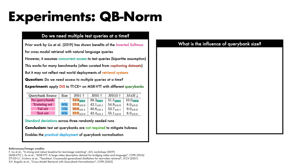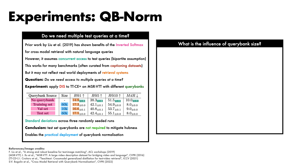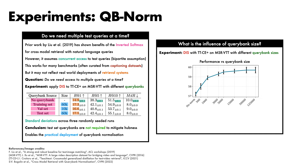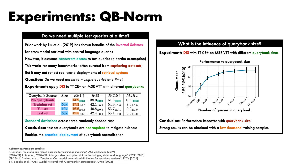The next experiment explores the influence of query bank size on performance by constructing query banks of different sizes with the same experimental setup as the previous experiment. We plot results with the number of queries in the query bank on the x-axis, and the geometric mean of recall at 1, recall at 5, and recall at 10 on the y-axis. We observed that performance improves with query bank size with diminishing returns at larger scales. We also observed that strong results can be obtained by constructing the query bank from just a few thousand training samples.